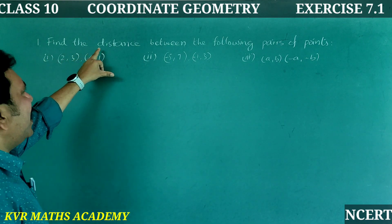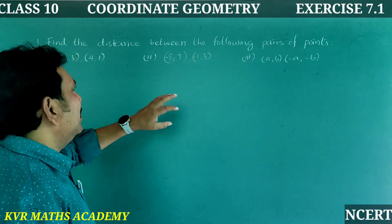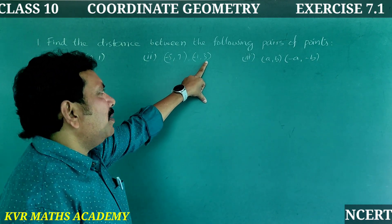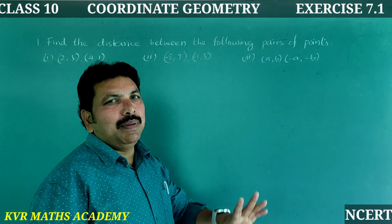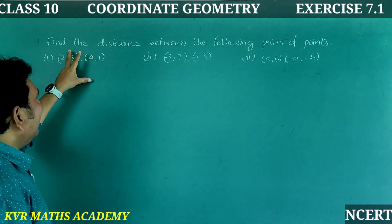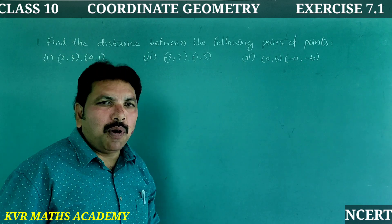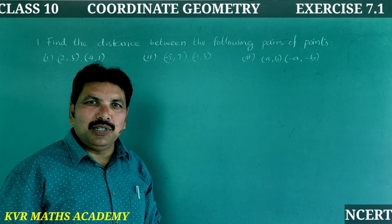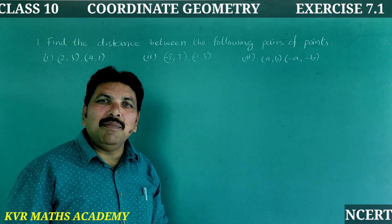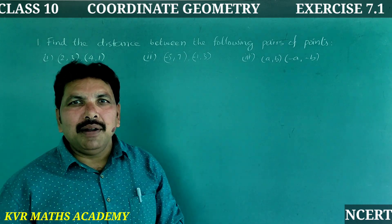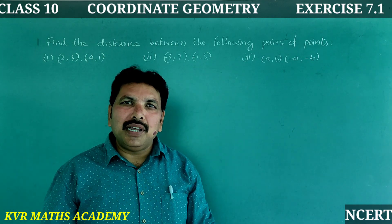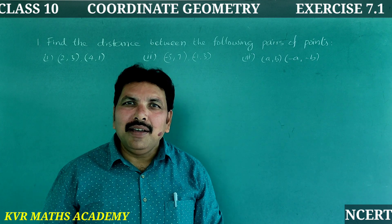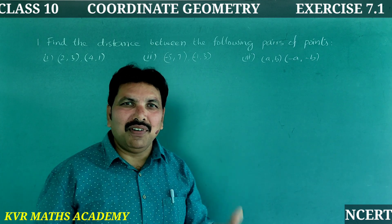This is the first question: Find the distance between the following pairs of points — (2,3) and (4,1); (-5,7) and (-1,3); (a,b) and (-a,-b). The distance formula for two points A(X1,Y1) and B(X2,Y2) is: AB = √[(X2−X1)² + (Y2−Y1)²]. Let us find them one by one.